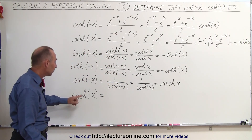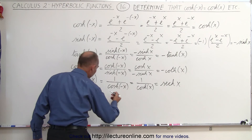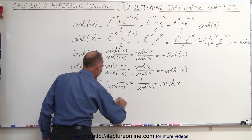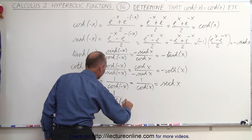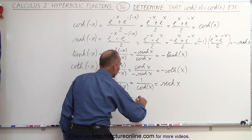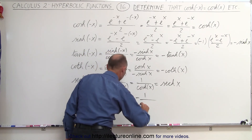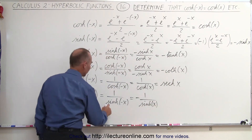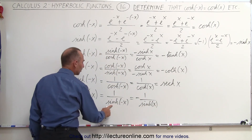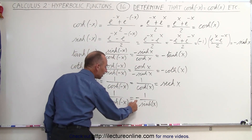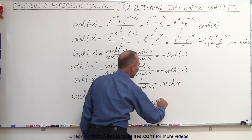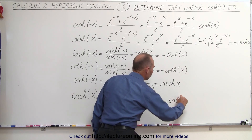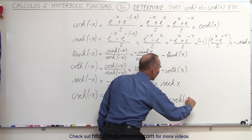Since the hyperbolic cosecant is 1 over the hyperbolic sine, this becomes 1 over the hyperbolic sine of negative x, which is equal to negative 1 over the hyperbolic sine of x, because the hyperbolic sine of negative x is equal to the negative hyperbolic sine of x. So this becomes equal to the negative hyperbolic cosecant of x.